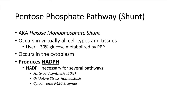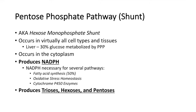The pentose phosphate pathway also produces trioses, hexoses, and pentoses. Pentoses are necessary for nucleotide synthesis.